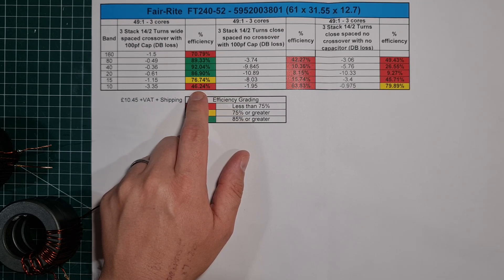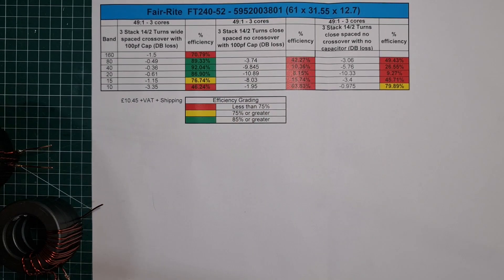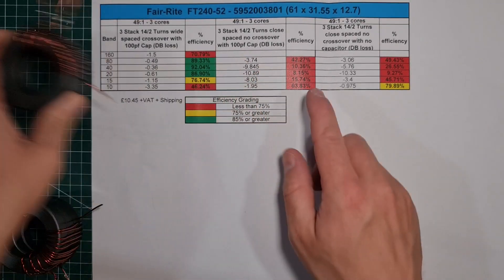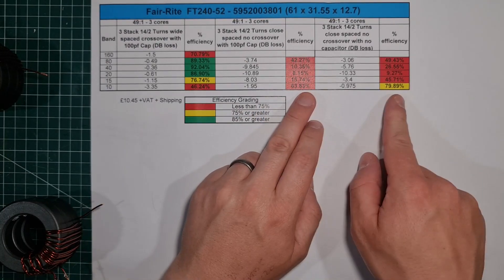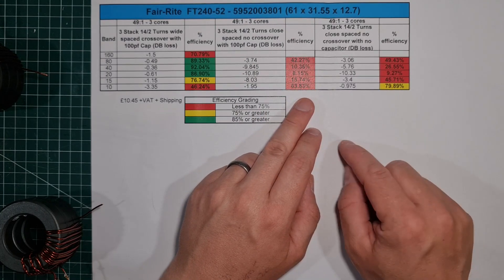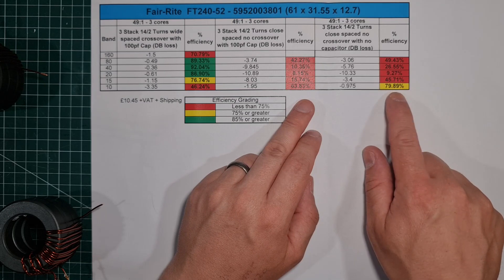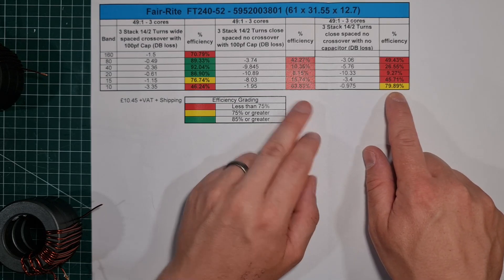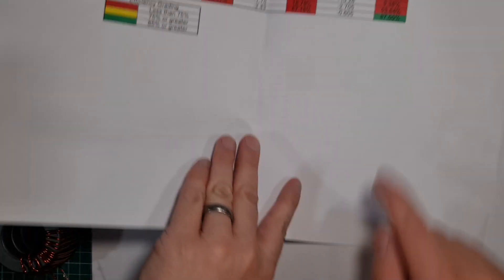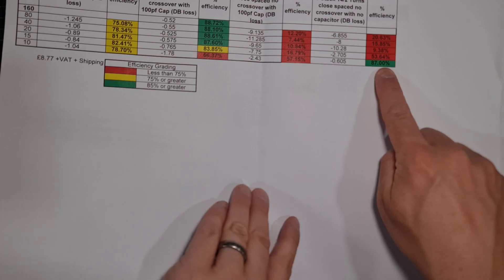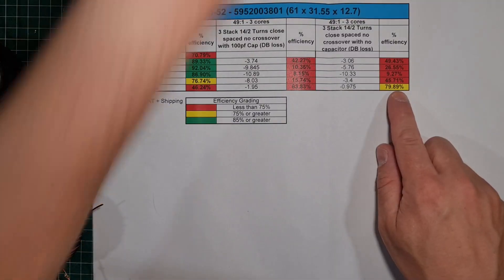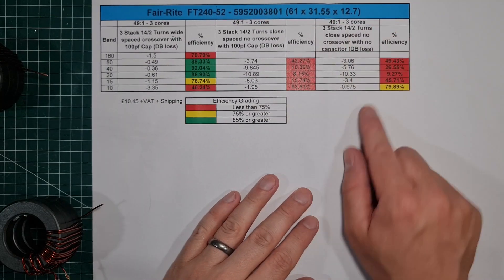Again, similarly to the 240-43, we did the close turns, and these were the losses. And if you look at them, they're just really quite shocking, with the exception of 10 meters again, which we've actually seen, and the 40-81, which is actually about 10% better. I would just discount these.